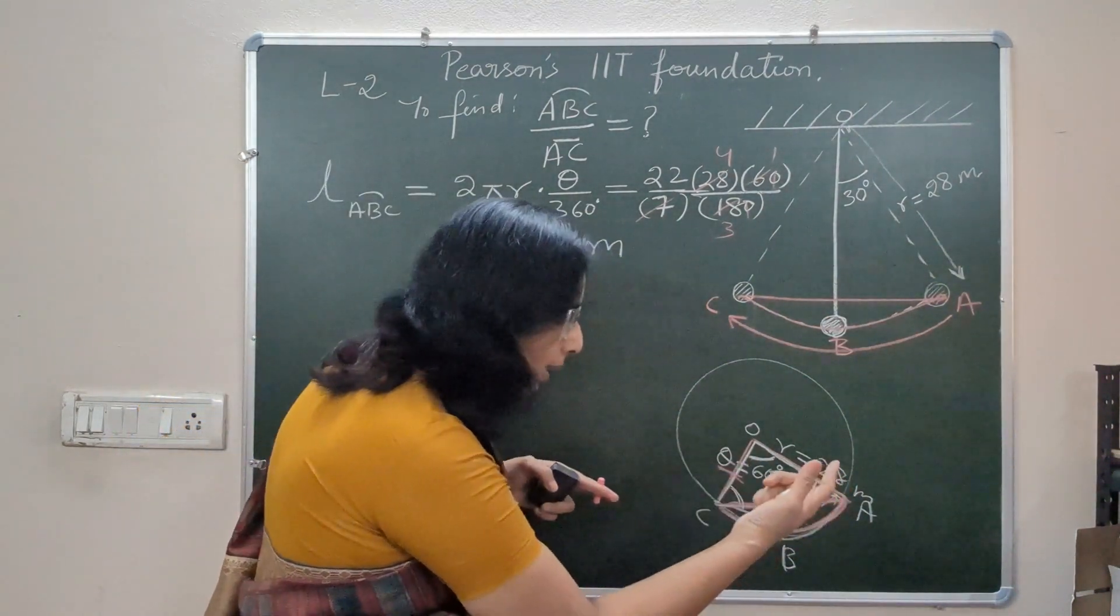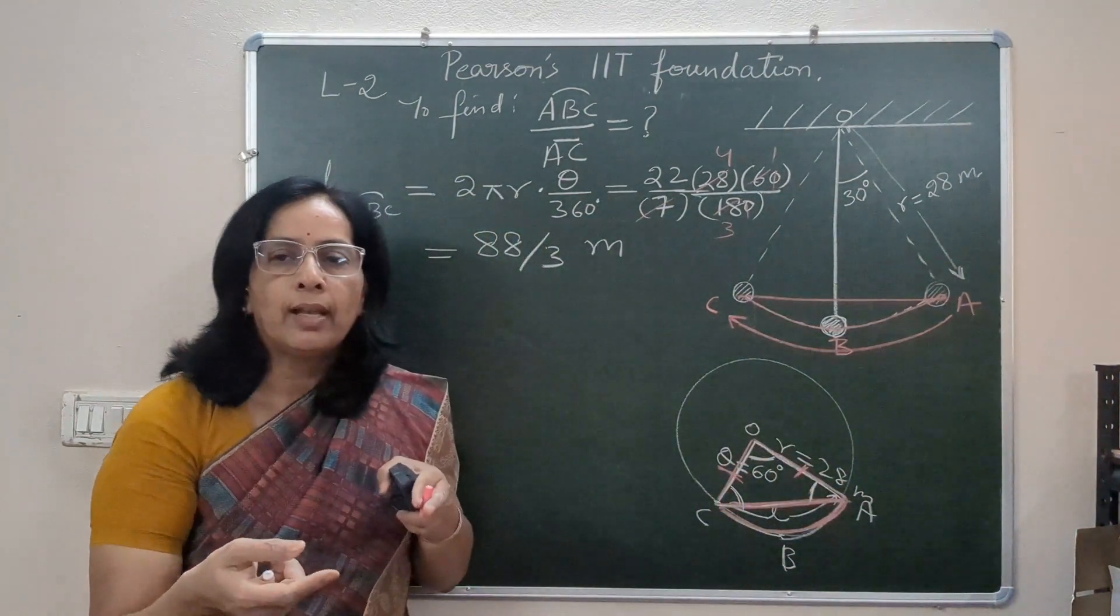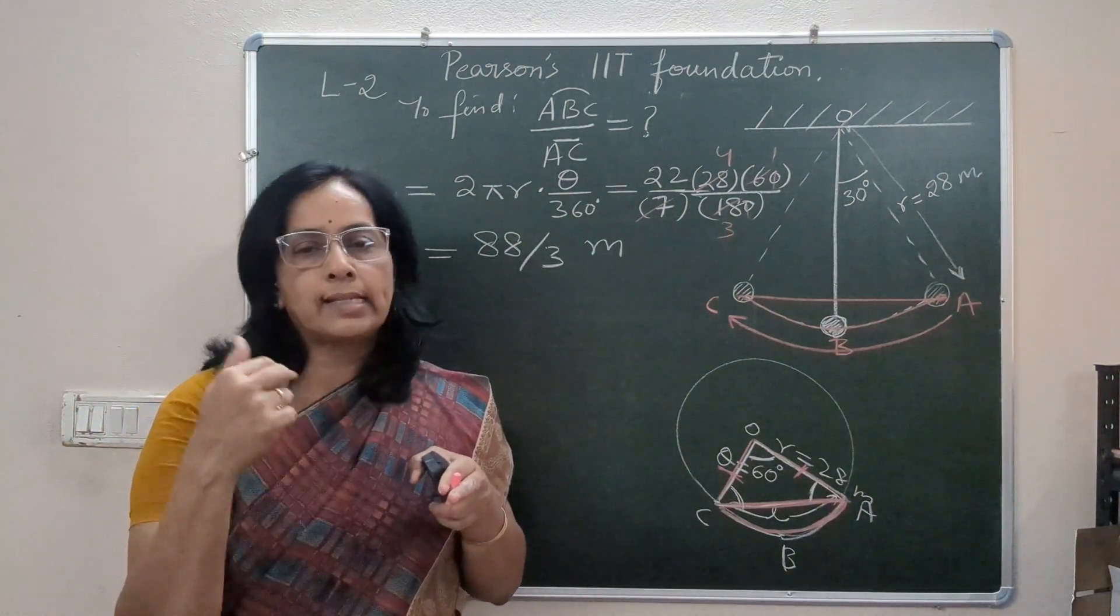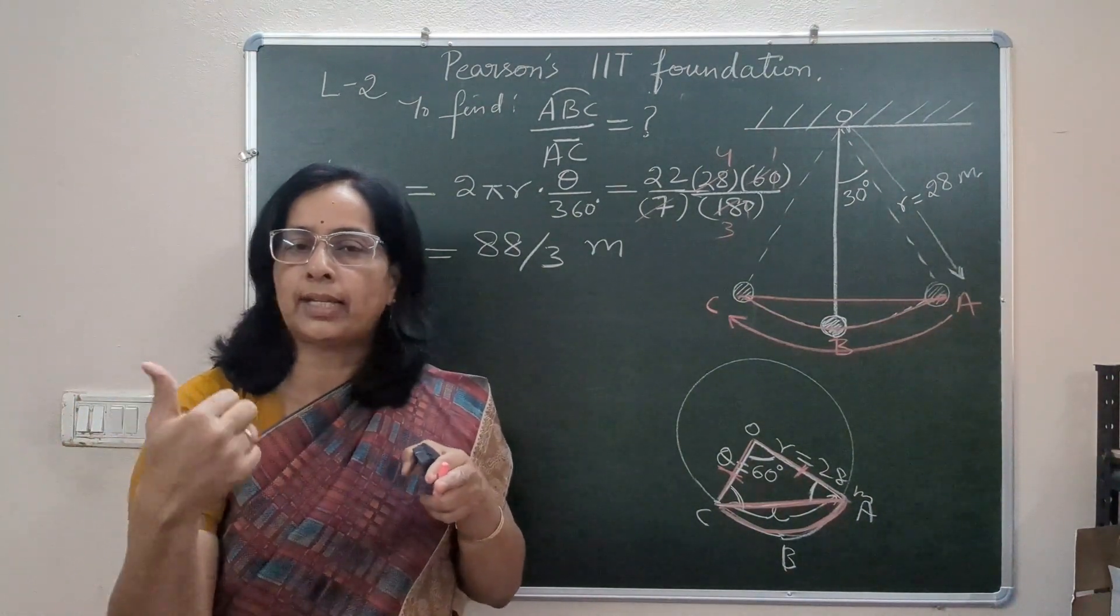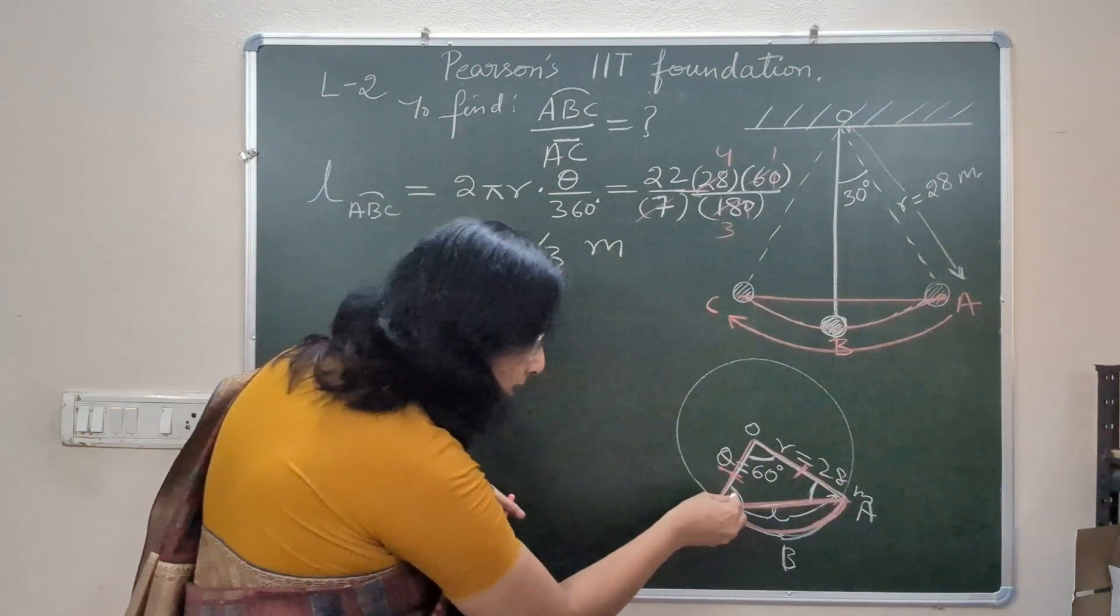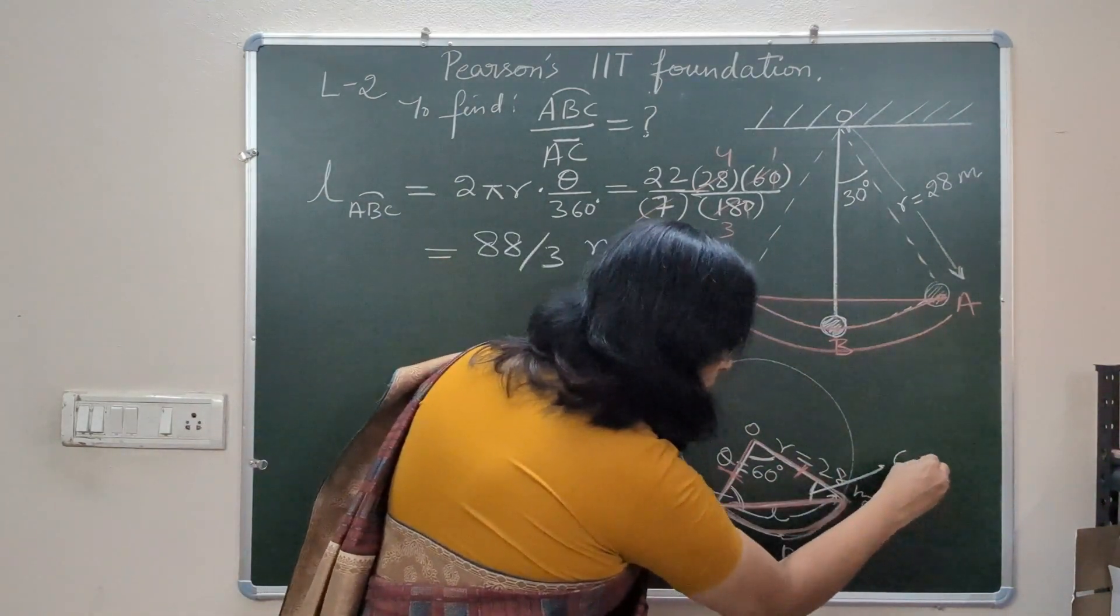So we will apply angle sum property. 60 plus x plus x is 180. So 60 plus 2x is 180. 2x is 180 minus 60, that is 120. x is 120 by 2, which is 60.